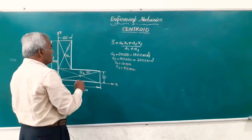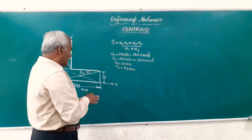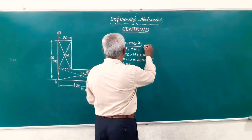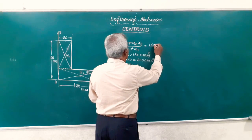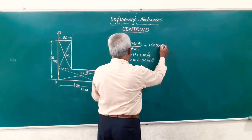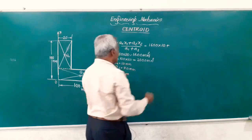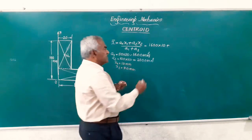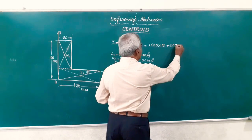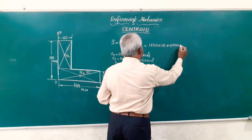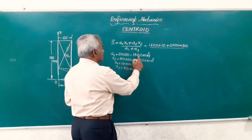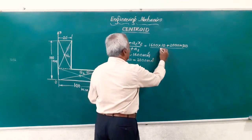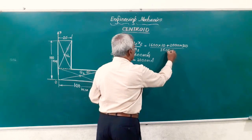Friends, we have got both the values of x1 and x2 and we should be able to find out what is the value of this x bar. This is 1600, a1 x1 is 10, plus a2 is 2000 multiplied by x2 is 50, divided by a1 plus a2, 1600 plus 2000, that is 3600.